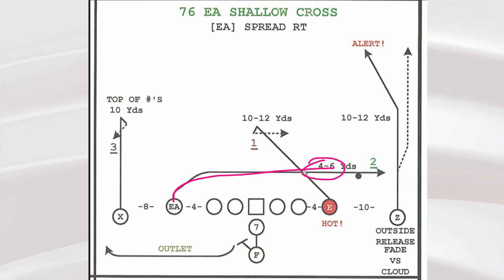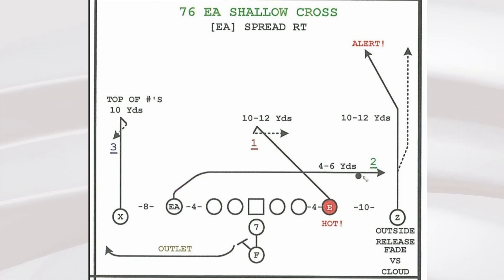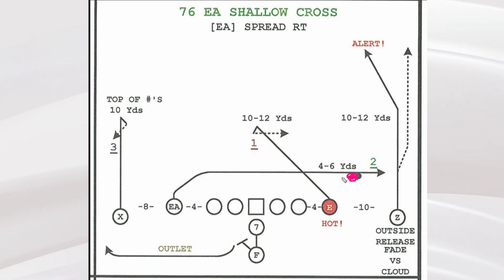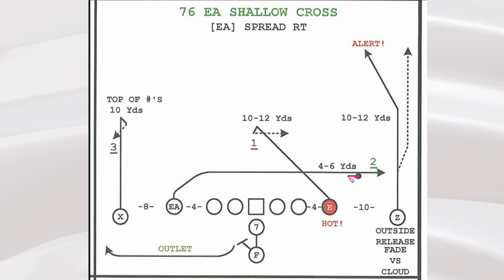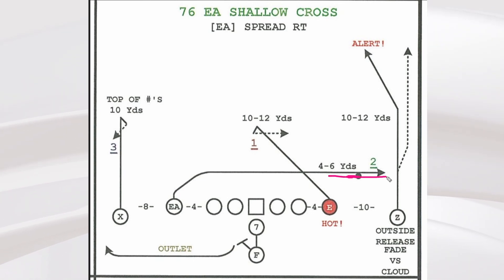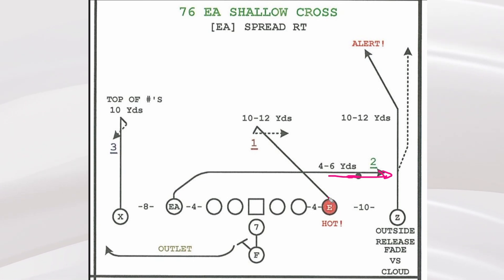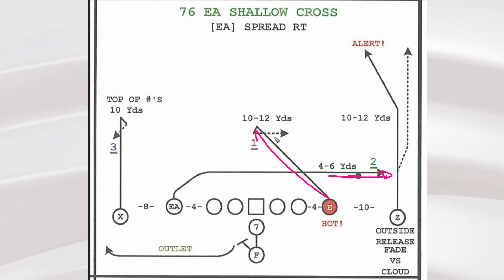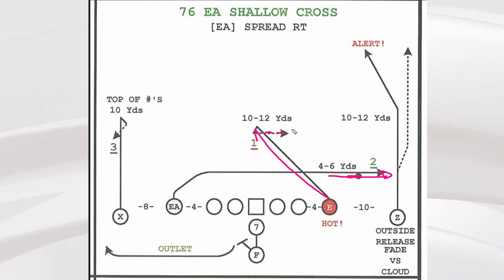Four to six yards — there's that zone image. Different teams have different landmarks for where you can settle down versus zone. So we're settling down versus zone right there on that dot. Versus man, we're going to run away. Here's that deep hook over the ball — right over the ball, 10 to 12 yards. If it's man, that's what that dotted line is — you can run away. So if we catch man, we've got him coming across and out and back across.